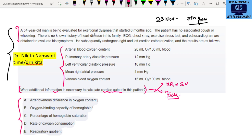Now when we read the question, it says 54-year-old man evaluated for exertional dyspnea that started six months ago. There is no associated cough or wheezing, no known history of heart disease, ECG, all is evaluated and these are the results of the cardiac catheterization. So we have arterial blood oxygen content, pulmonary artery diastolic, left ventricular diastolic, mean right atrial and venous blood oxygen content.